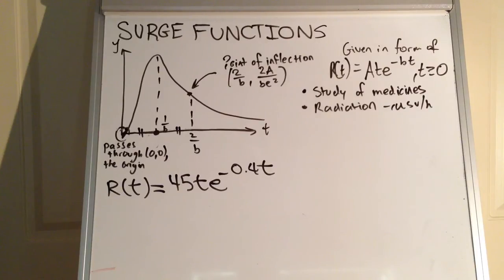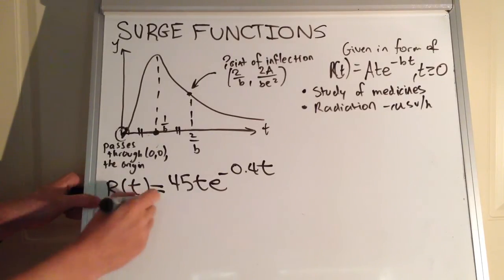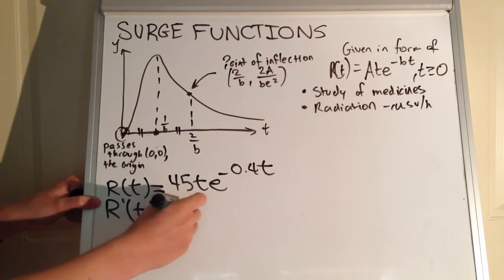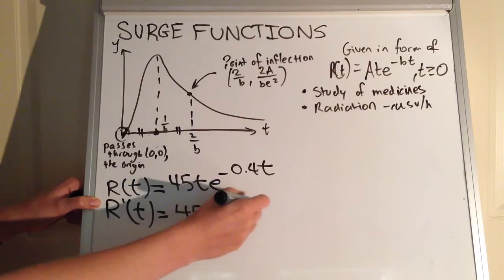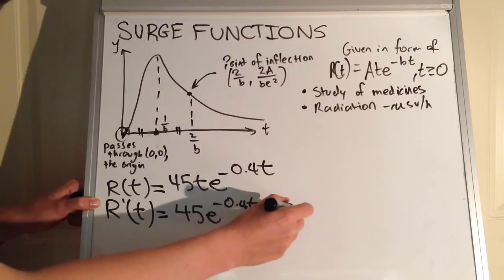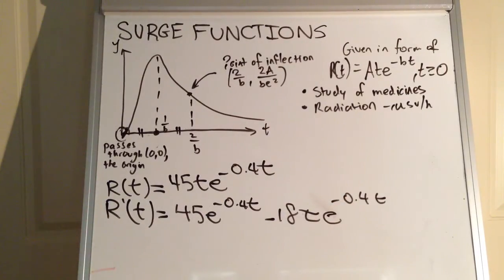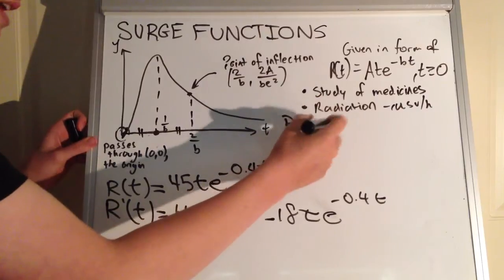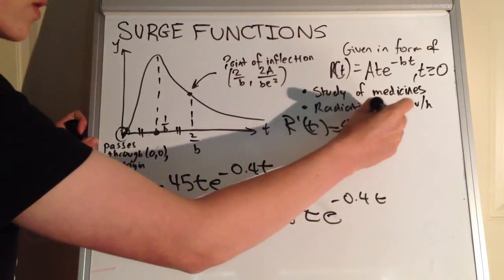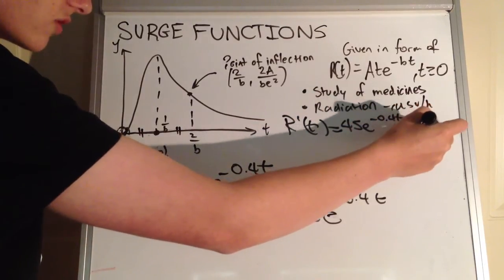Part A asks us to show that the derivative of this function is given by R'(t) equals 45·e to the power of negative 0.4t, minus 18t·e to the power of negative 0.4t. It also asks what the derivative represents in context. So what I'll do is move that derivative up here to get some working space, and go through the process of using the rules of differentiation to ensure that is indeed the derivative.